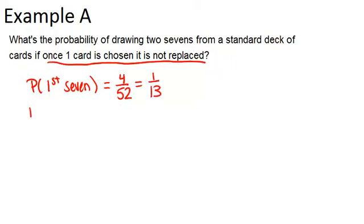Now, once we've drawn one card, whether or not it is a seven, there's only 51 cards left. So when we're thinking about the probability of the second seven, we're going to think about out of 51 cards.